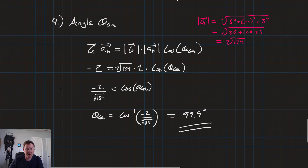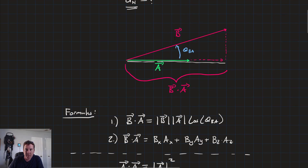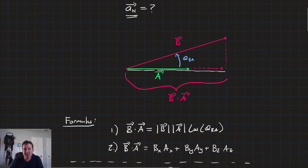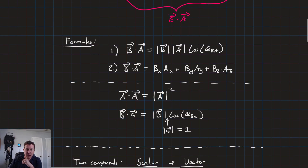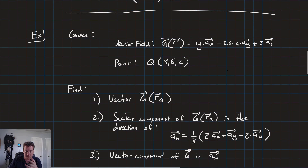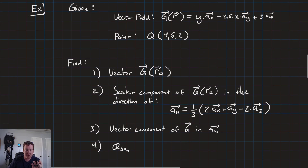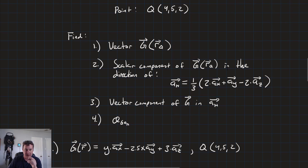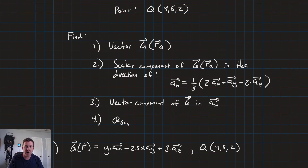That's all about the dot product. The dot product tells us the components of a vector in the direction of any arbitrary vector, so we're not limited to just x, y, and z. We worked out an example: given a vector field and a point, we found the vector, its scalar component in the direction of an arbitrary unit vector, its vector component, and the angle between the two vectors. As always, if you have any questions, please let me know, and I will see you in the next lesson. Thank you.